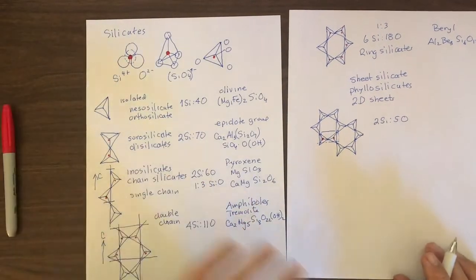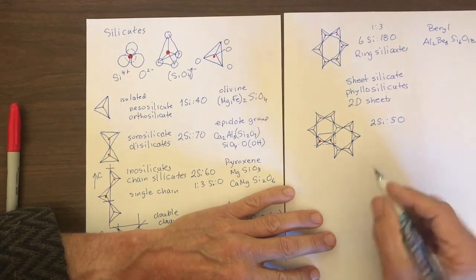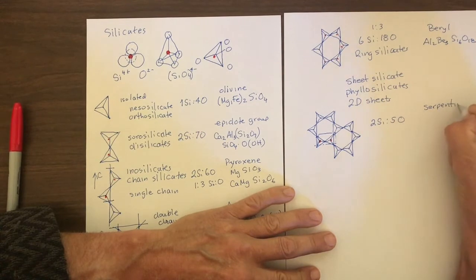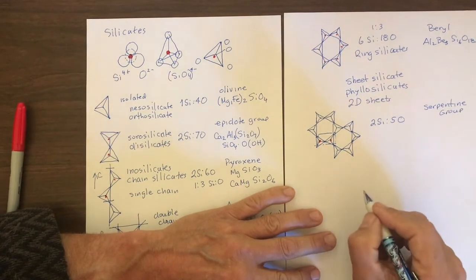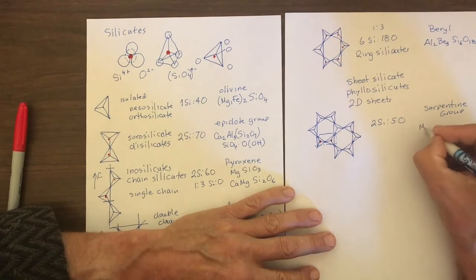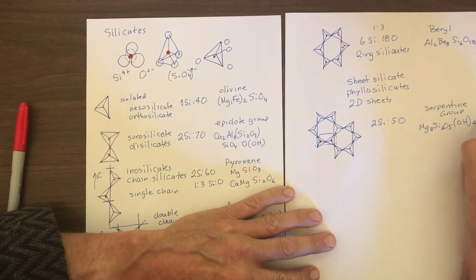And a common mineral in the simple phyllosilicate would be the serpentine group, which consists of silica tetrahedral sheets. And it has a formula of Mg3, Si2, O5, OH4. Okay.